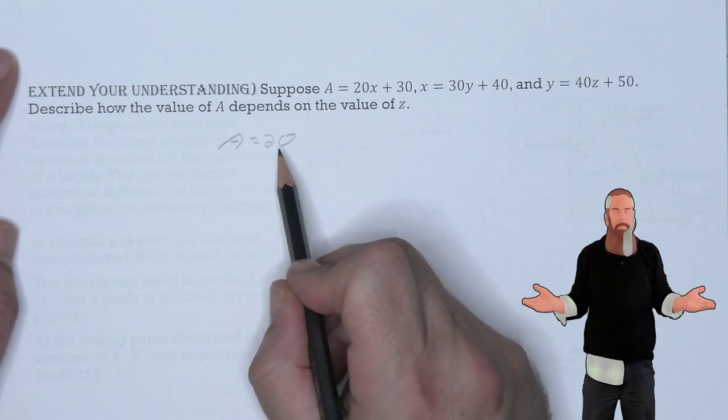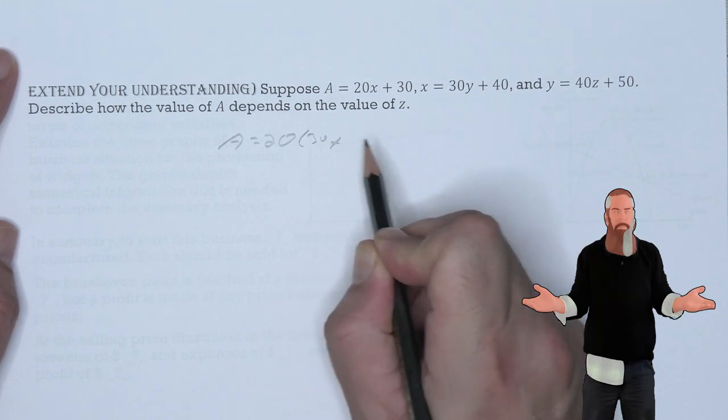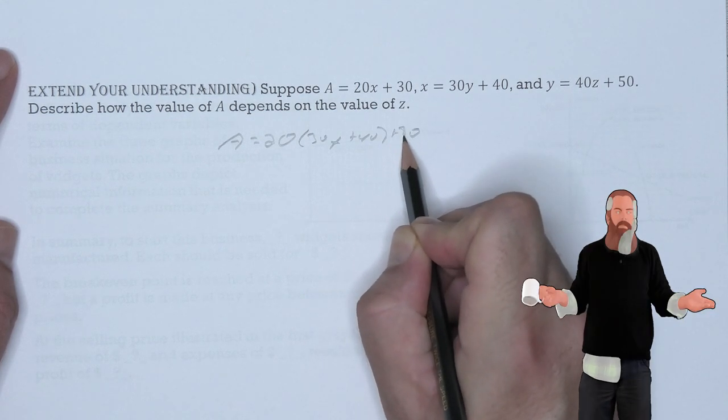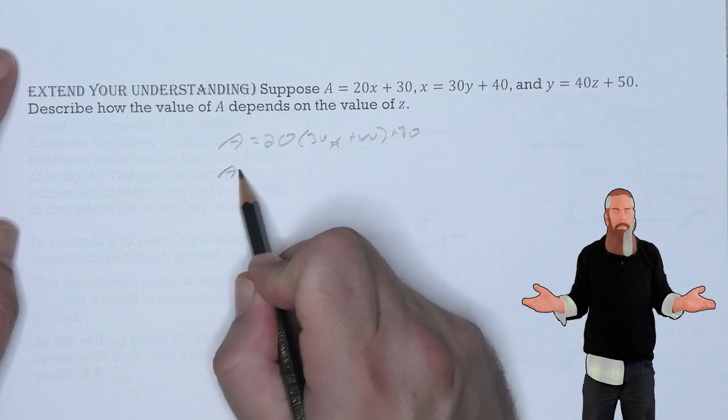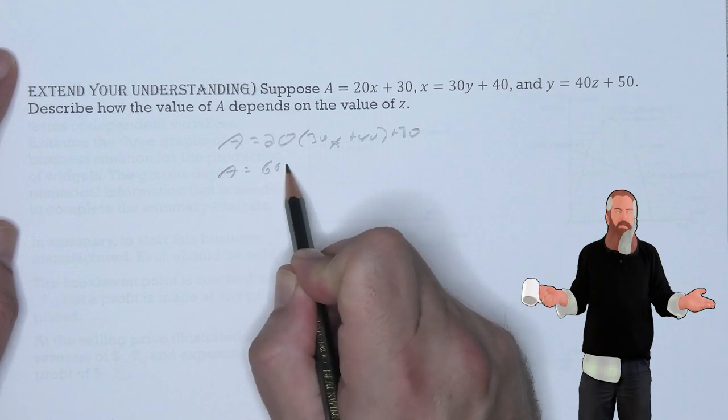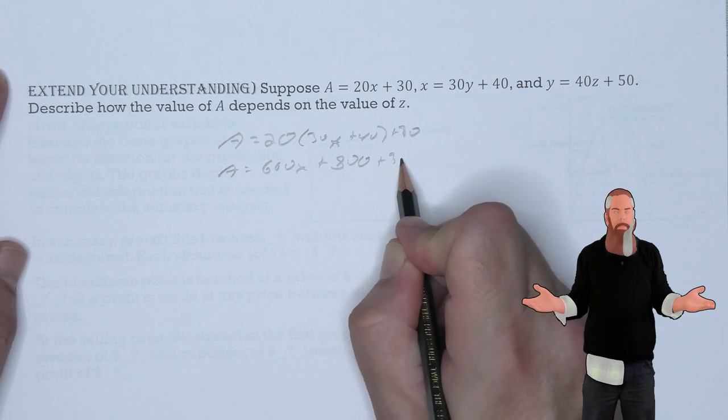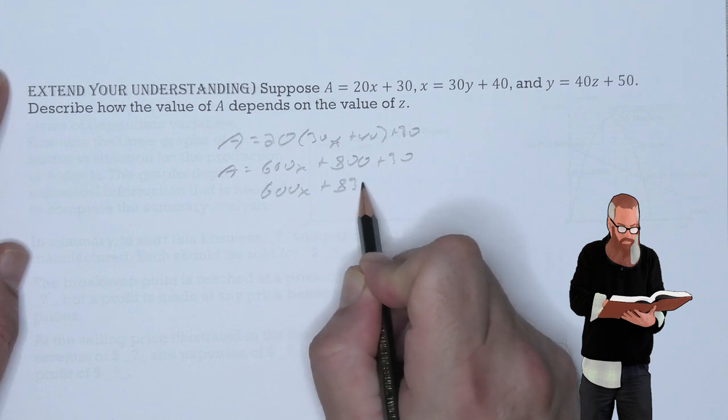So that A is equal to 20 times X. And now X is 30Y plus 40. And then we have a plus 30. So, we're going to get A in terms of Y. This means that A is 600Y plus 800 plus 30, giving us 600Y plus 830.